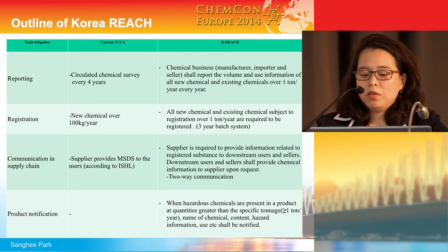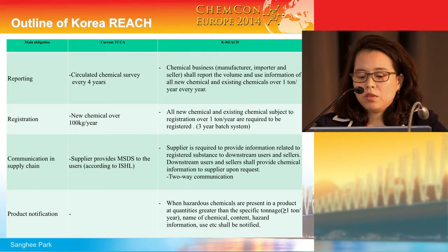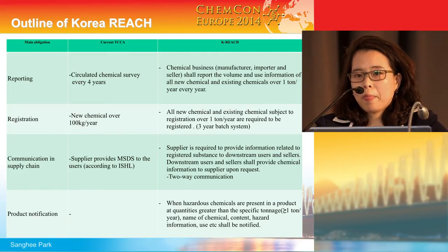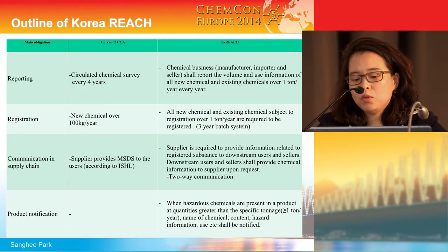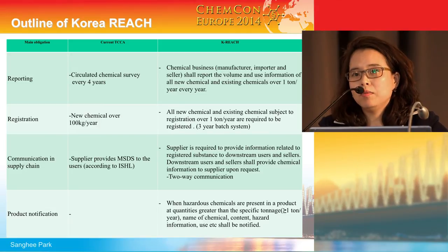For communication in the supply chain, the supplier is required to provide information related to the registered substance to downstream users and sellers. Downstream users and sellers, in exchange, have to provide chemical information back to the supplier upon request. It's a kind of two-way communication.